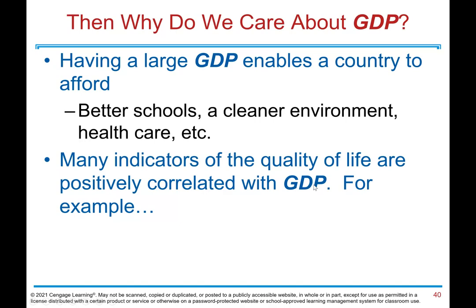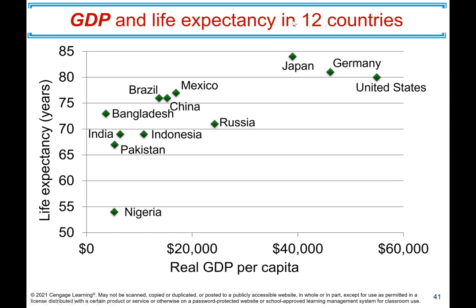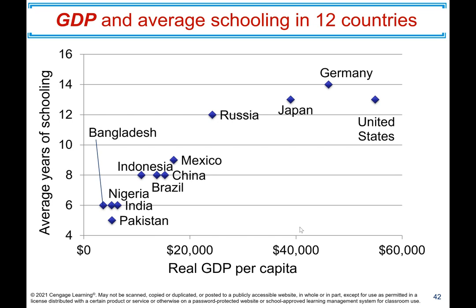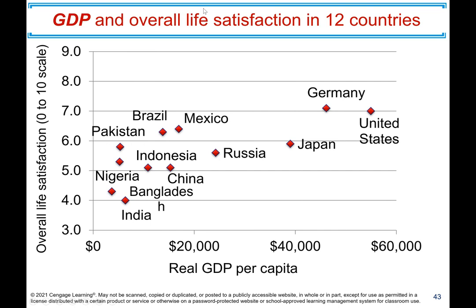For example, looking at GDP and life expectancy in 12 countries, countries with high GDP — Japan, Germany, United States — have higher life expectancy, averaging 75 to 85 years, while people in poorer countries live much shorter lives. Similarly, countries with higher GDP have higher average years of schooling. And looking at GDP and overall life satisfaction, citizens of high-GDP countries tend to report greater happiness and life satisfaction than people who live in poorer countries.